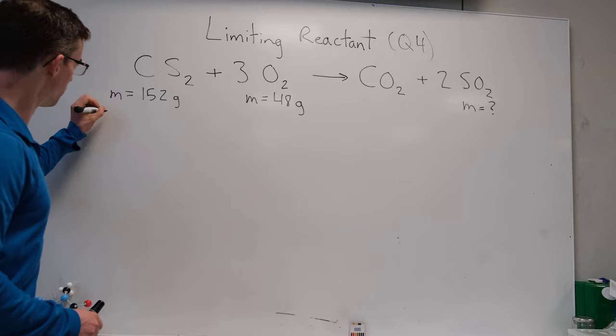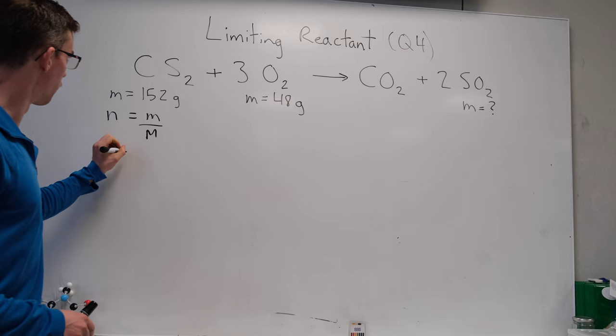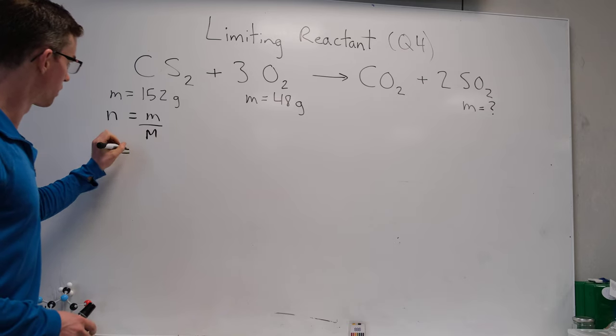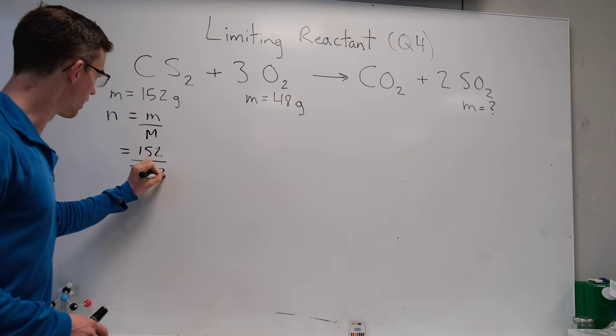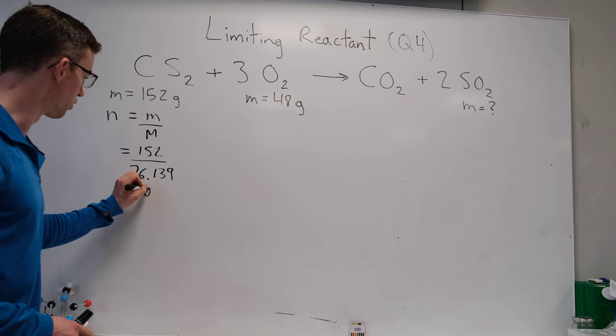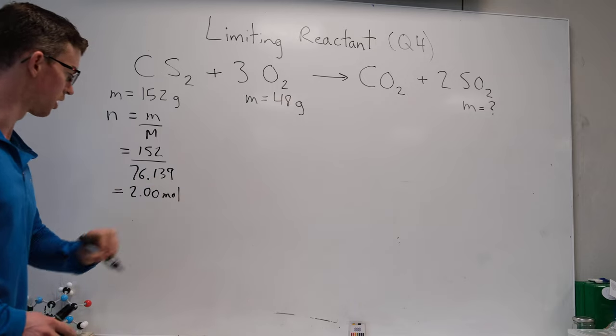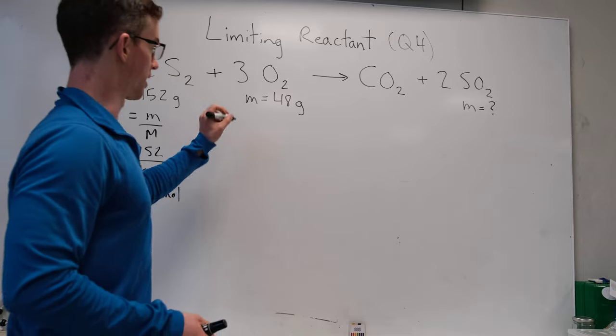Let's choose carbon disulfide. Let's plug in 152 divided by 76.139 and we get a really nice number in the end. It basically rounds to 2.00 moles. So we get a nice number to work with. Let's do the same with the other reactant.